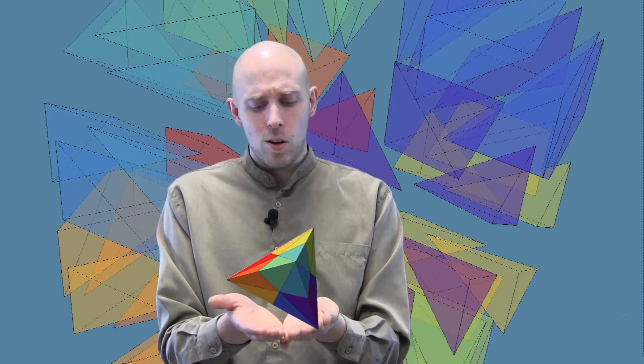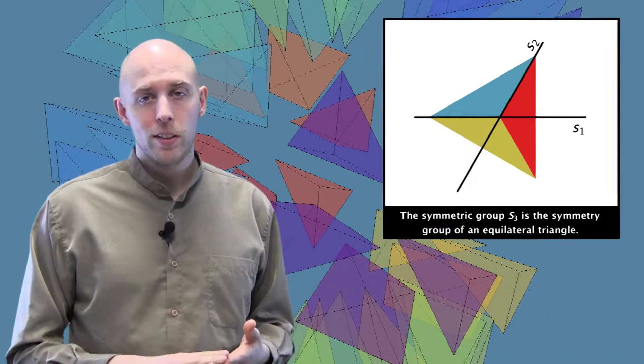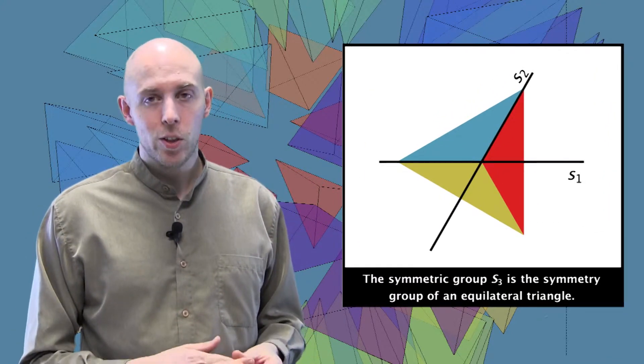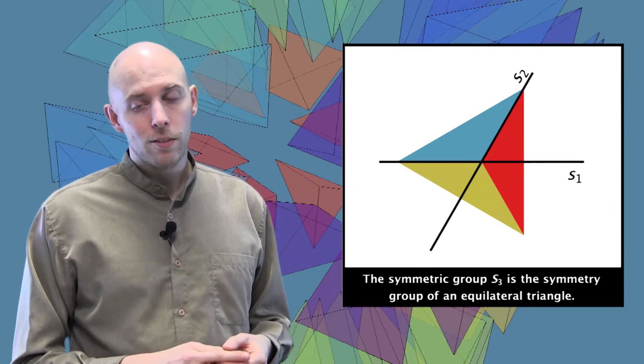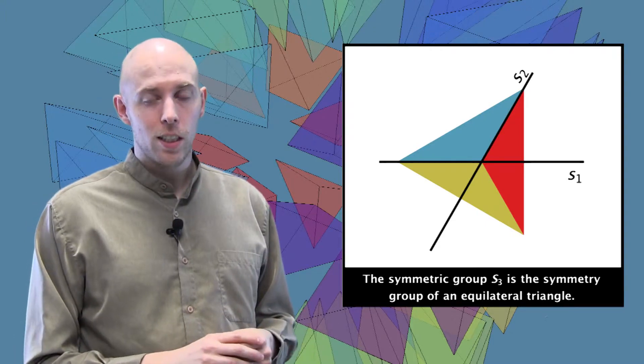Another famous group is the symmetric group, which we can understand as the group of reflection symmetries of a regular simplex. For example, a tetrahedron. Think that in higher dimensions. In fact, we've already seen the two-dimensional version, the triangle. The symmetric group S3 is the symmetry group of a triangle, where we have two mirrors placed at an angle of 60 degrees to each other.